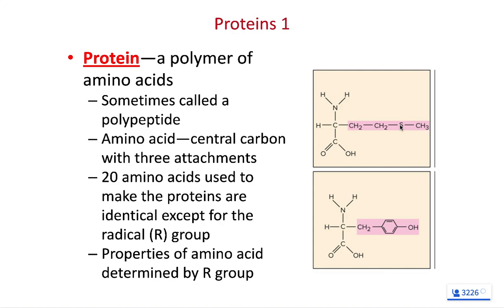Proteins are the single most important biomolecule in our bodies — most common, widest variety of functions, and we spend the most time on them in this class. A protein is made of many repeating amino acids — a polymer of amino acids, sometimes called a polypeptide. We as human beings have 20 amino acids that make up our proteins, though in nature there can be an infinite number of amino acids.